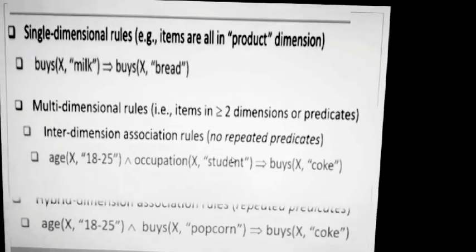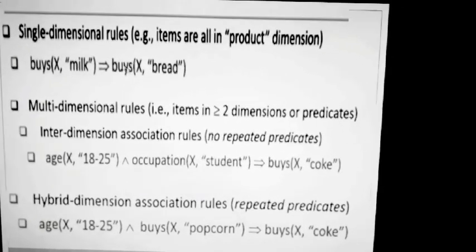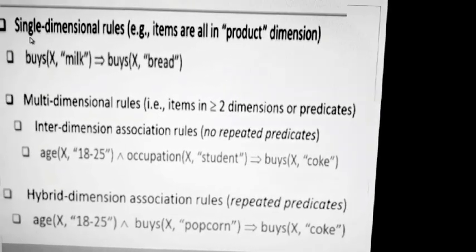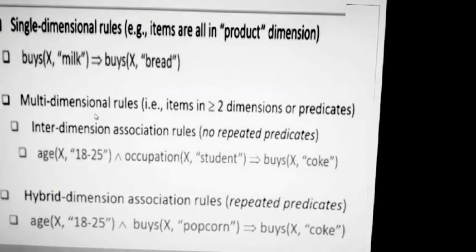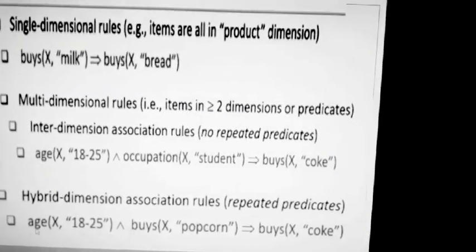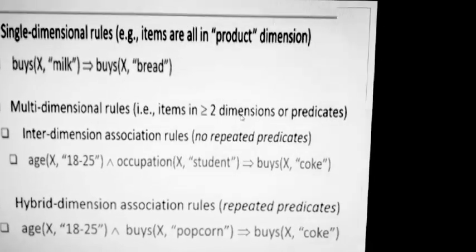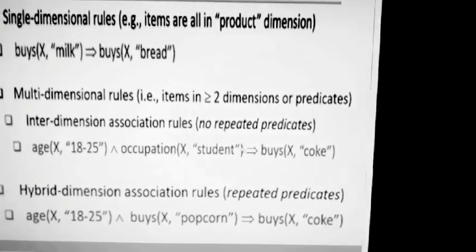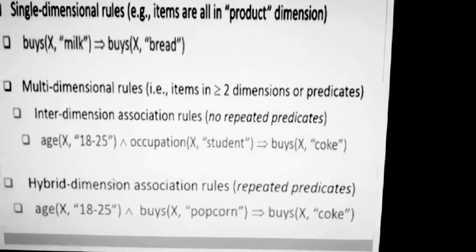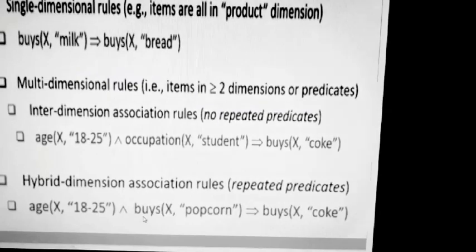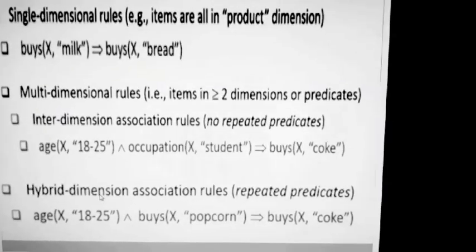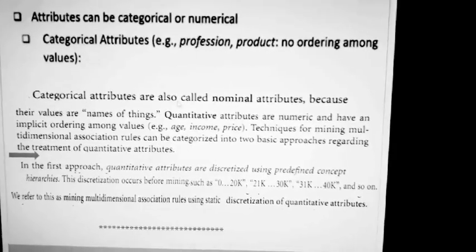So we have three types. For single dimensional, there is only one predicate — 'buys' — that's why it's called single. For multi-dimensional rules, there are more predicates or dimensions, and the predicates are not repeating — hence inter-dimension. For hybrid dimension, there is repetition of predicates, which is why it is called hybrid. So the three types are: single, multi, and hybrid dimensional.